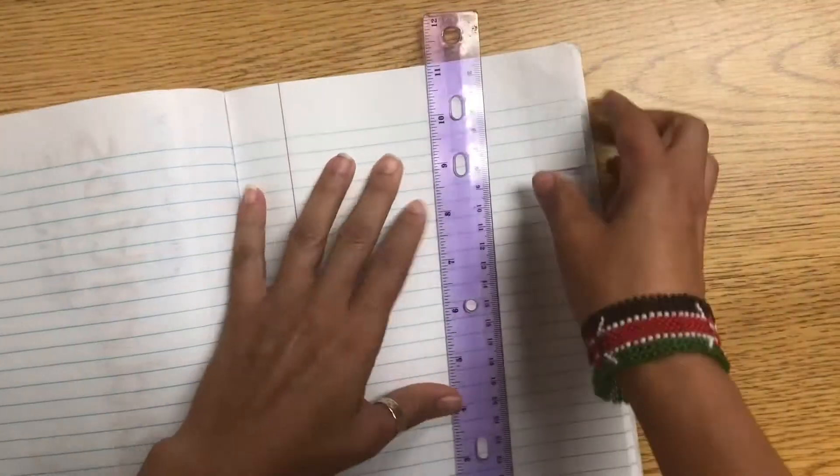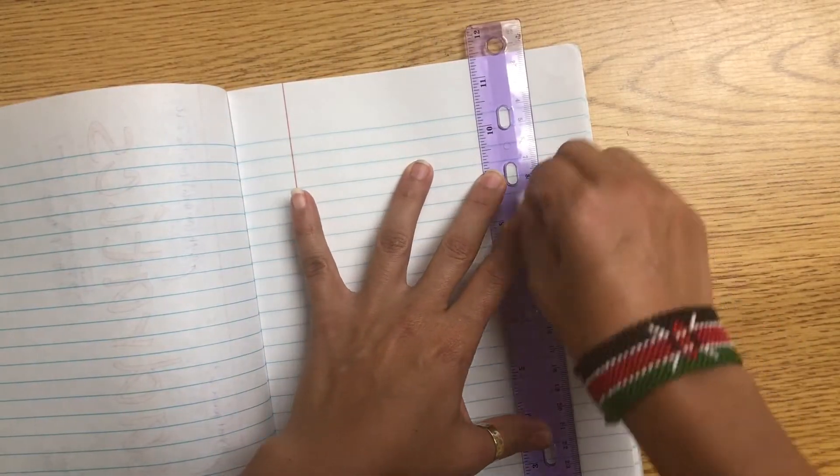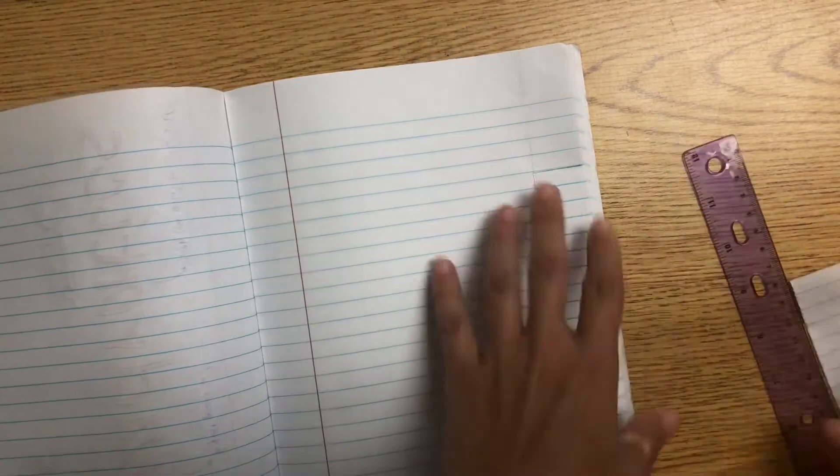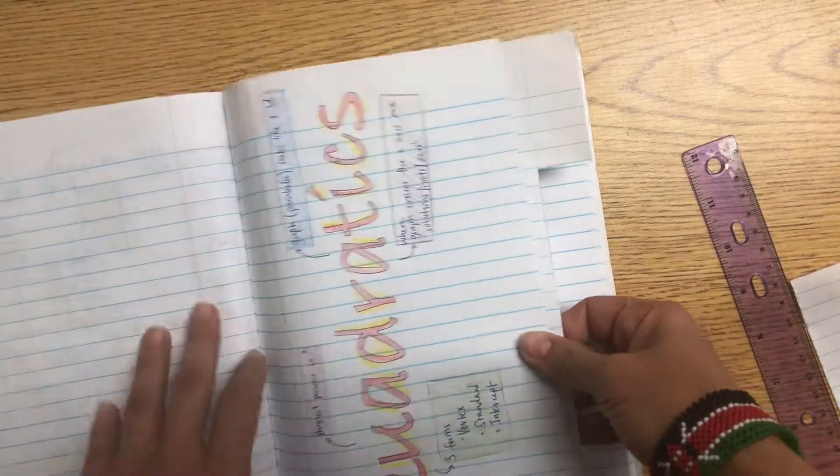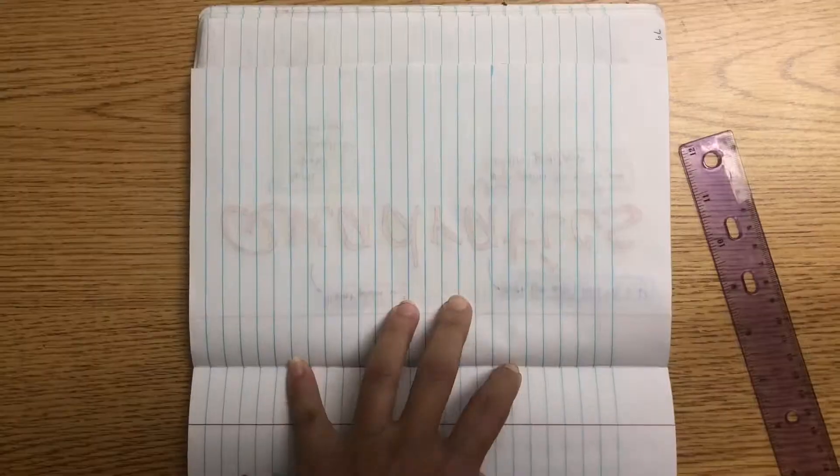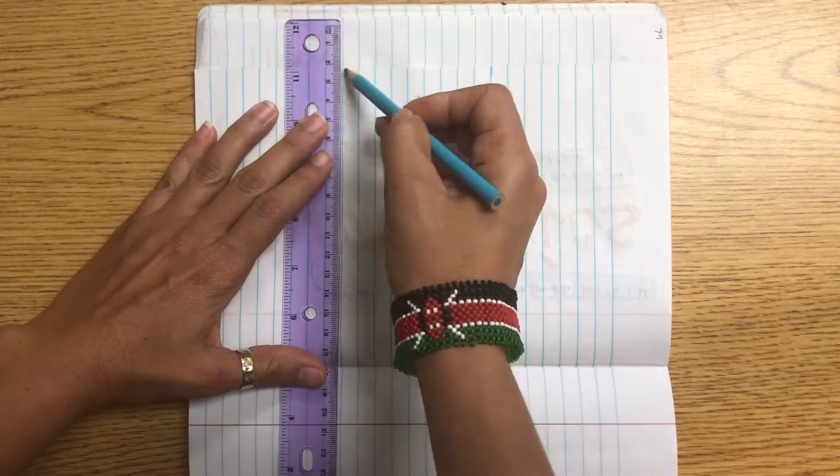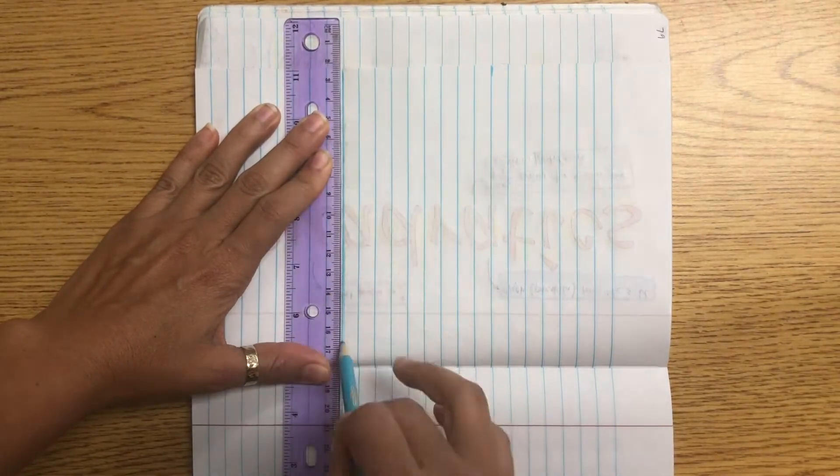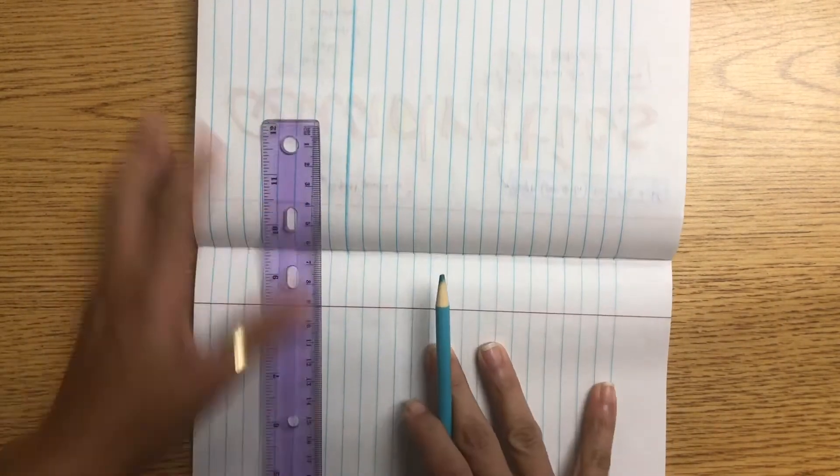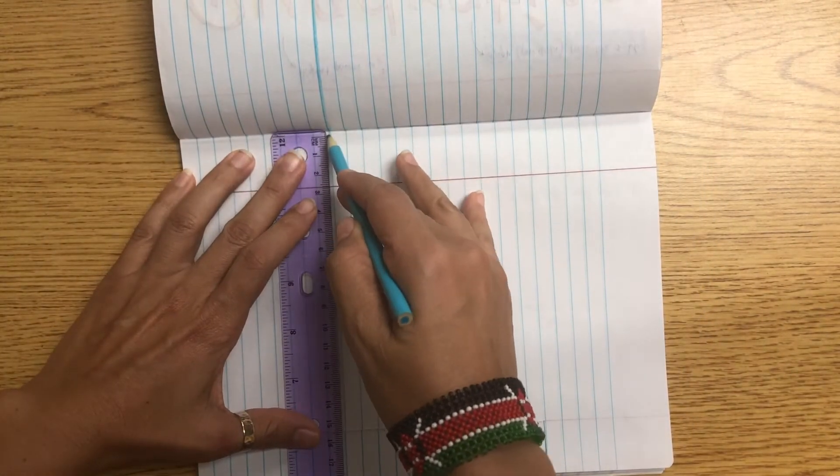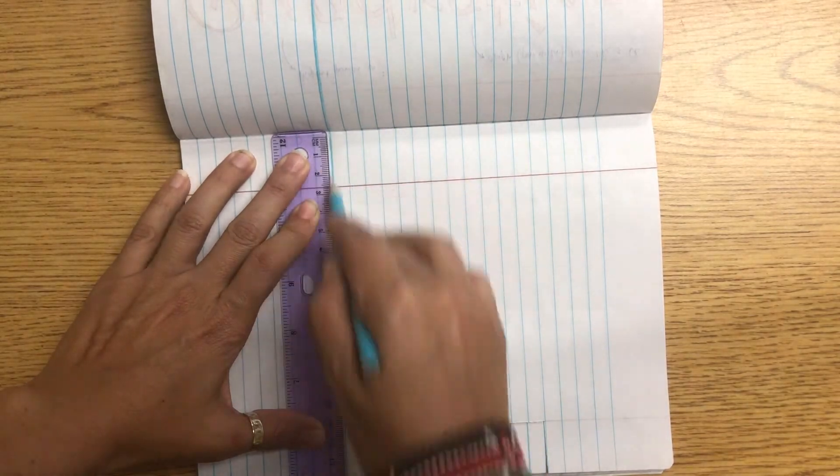So you're going to make a tab, make it a little bit longer than usual, like five or six lines. Cut to the margin and then cut all the way down. Then you're going to separate the page into three equal parts. So vertically, you're going to separate the page into three equal parts.